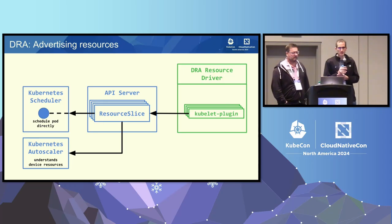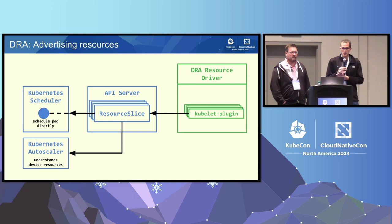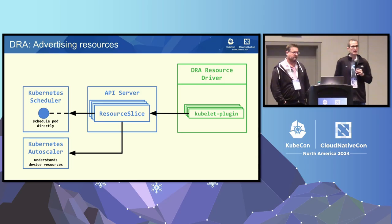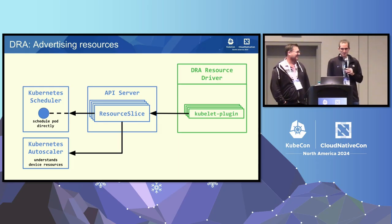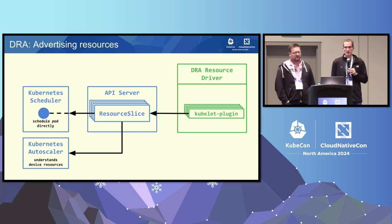A DRA driver now consists entirely of just the kubelet plugin, so it's easy to develop. The driver is responsible for populating the resource slices. The scheduler sees them and, because it knows it owns all devices described in the resource slices, it can schedule by directly picking something for a pod and moving on immediately. The Kubernetes Autoscaler can also understand the same thing as the scheduler and make intelligent decisions about scaling up nodes, because it knows which resource slices and devices are on those nodes.